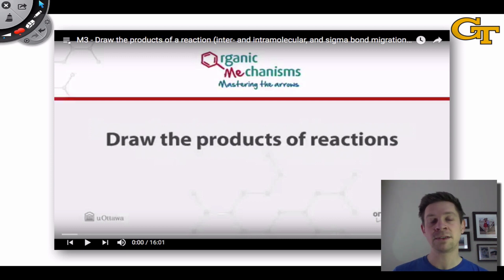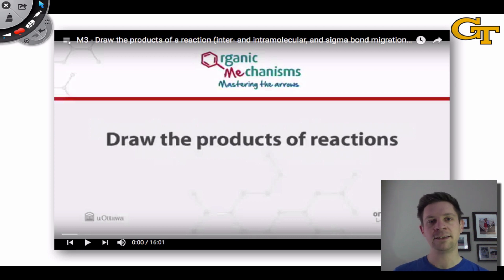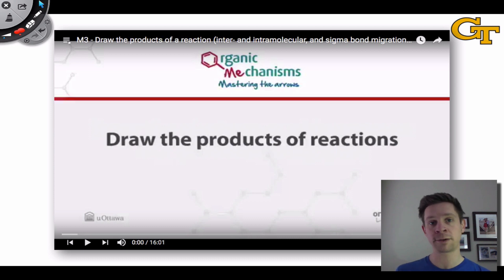The idea here is that we're given the reactant structure and the electronic changes that occur in the form of the curved arrows, and from these we need to draw the product. This is all bookkeeping in the sense that if you understand what a curved arrow represents electronically, then there is a logical deductive process to go from reactants and curved arrows to products, or from given reactant and product structures to curved arrows. You want to master this before getting too deep into the curved arrow formalism.